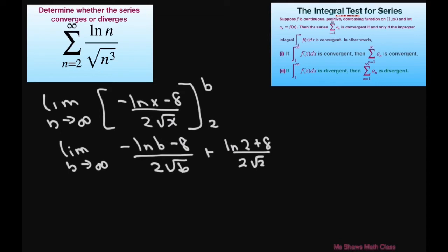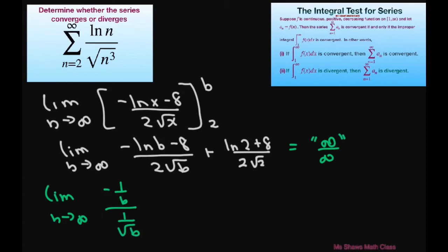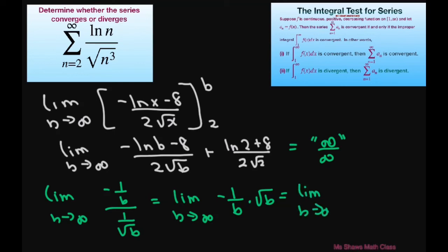Using L'Hôpital's rule — the form we have is infinity divided by infinity — we write this as the limit as b approaches infinity of negative 1 divided by b, divided by 1 divided by square root of b. This simplifies to the limit as b approaches infinity of negative 1 divided by square root of b, which equals 0.